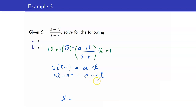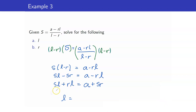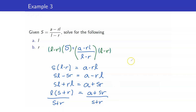We now collect all terms with L on one side and all terms without L on the other side. So I have SL, and I bring the minus RL to this side where it becomes plus RL. Then A minus SR goes to the other side where it becomes plus SR. Now we factor out L, giving us L times the quantity S plus R is equal to A plus SR. Dividing both sides by S plus R, we get L is equal to A plus SR all over S plus R.